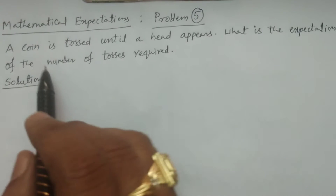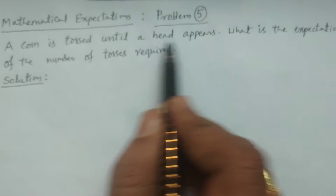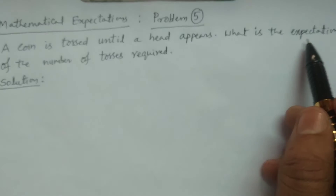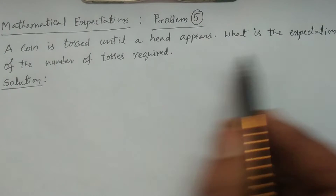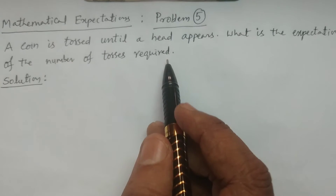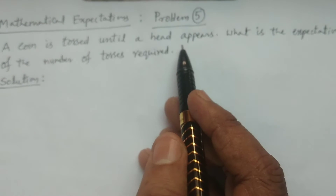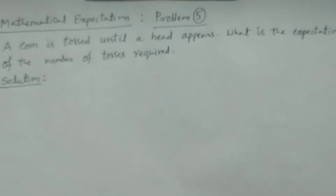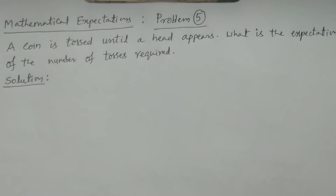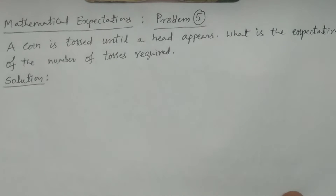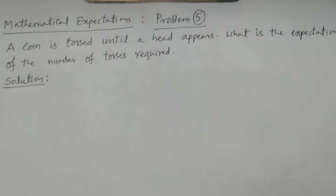See the problem here. A coin is tossed until a head appears. What is the expectation of the number of tosses required? The coin is tossed until a head appears — the tossing continues until you obtain a head. You have to calculate the expectation of the number of tosses — how many tosses are required?